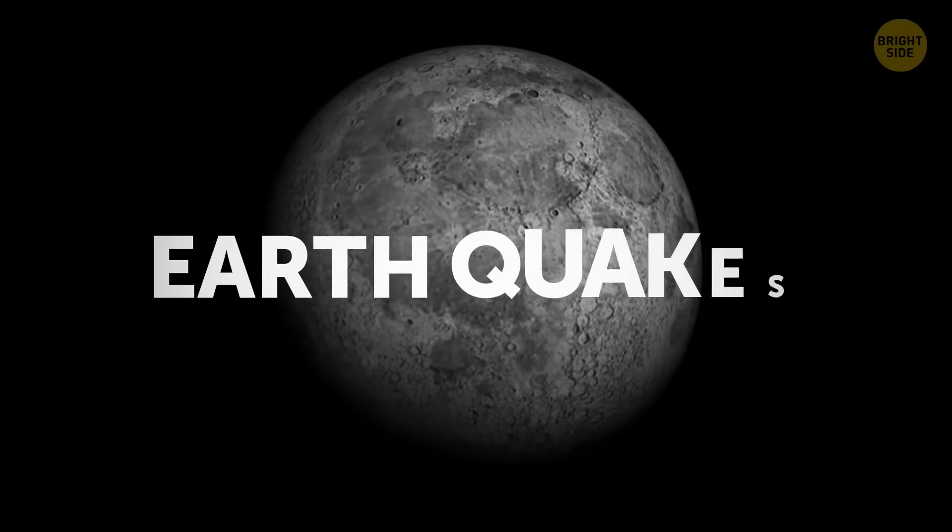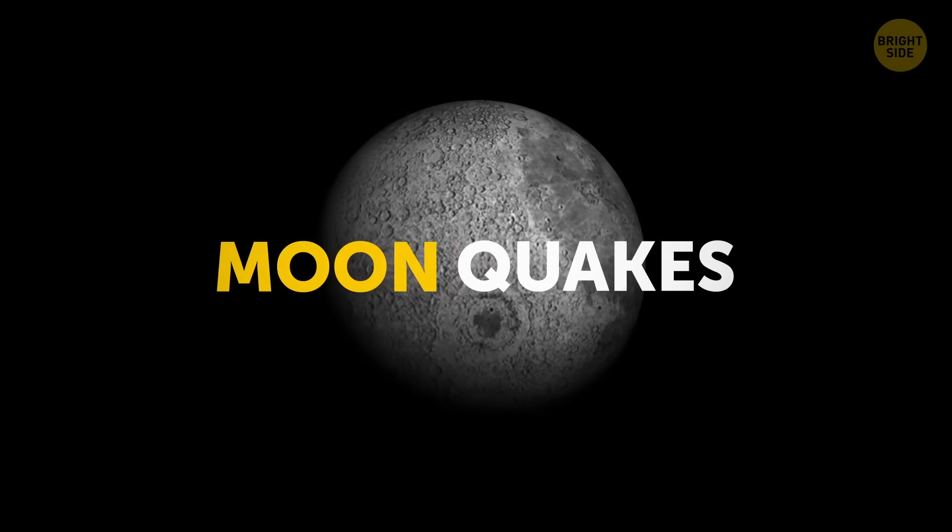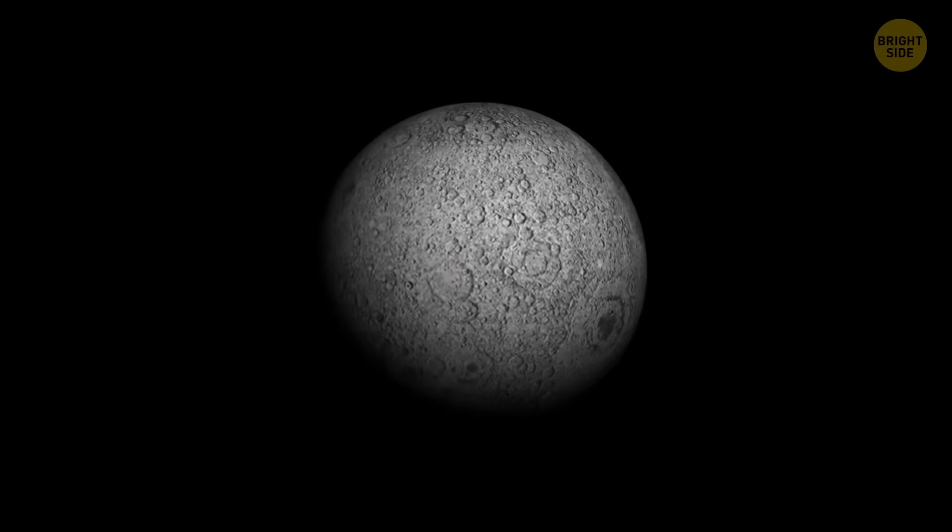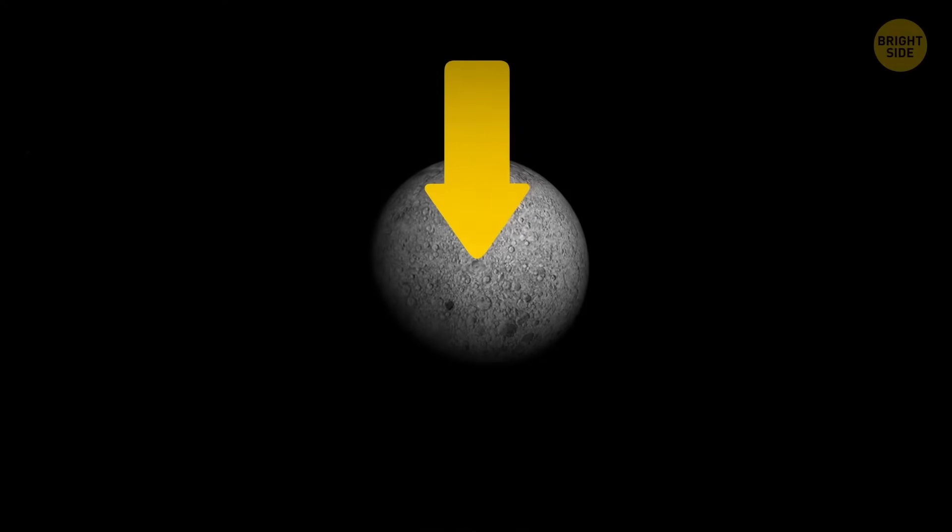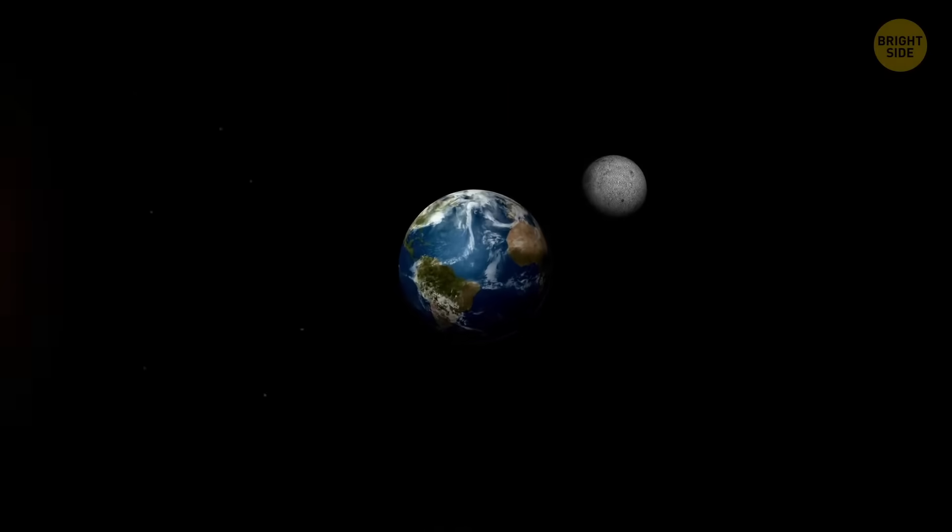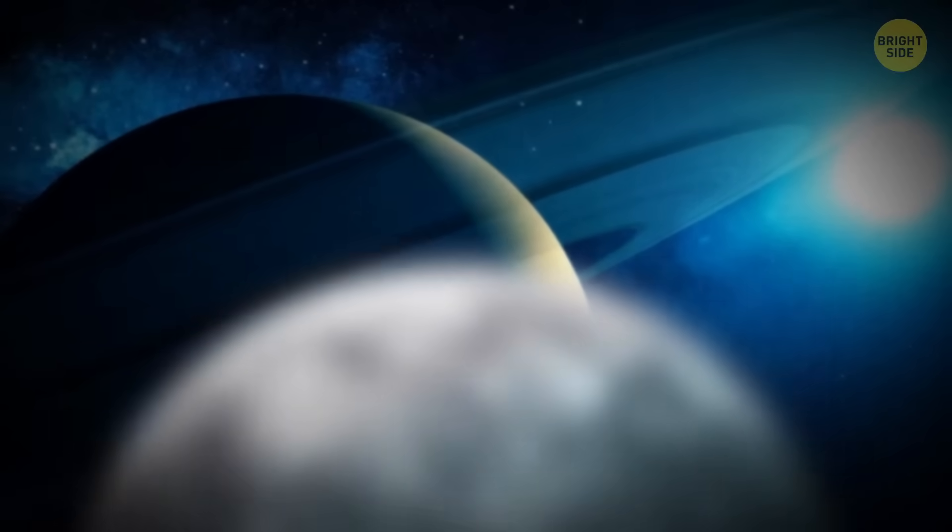Earthquakes on the Moon, or more correctly, moonquakes, aren't something from science fiction. They don't occur as often as on our planet. And when they do, it happens closer to the center of the satellite. Scientists think moonquakes might be caused by the gravity of Earth and the Sun.